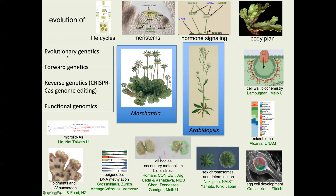As I mentioned, my lab uses a combination of evolutionary genetics, forward genetics, reverse genetics — for example, genome editing — and functional genomics. At present, most of the projects in the lab are focused around life cycles, meristems, hormone signaling, and body plan evolution, which we think are some of the major drivers of this transition from an aquatic alga to a complex land plant.